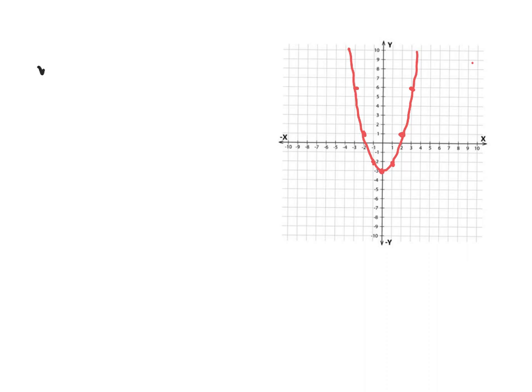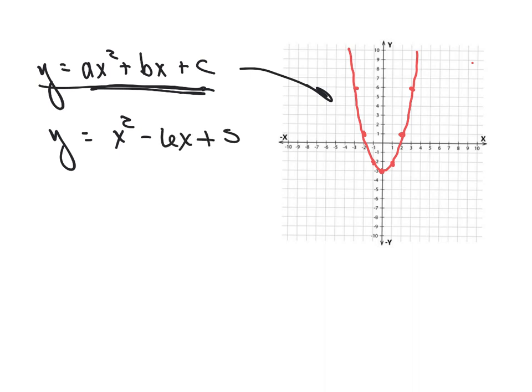When we have an equation y equals a number, we'll call it a, times x squared, plus b times x, plus c - a, b, and c are just numbers. If I have an equation in that form, it will always give me a parabola. Sometimes the parabola opens up, sometimes the parabola opens down. When it's written in this form, the last number, the number without a variable - x and y are variables, a, b, and c represent numbers.